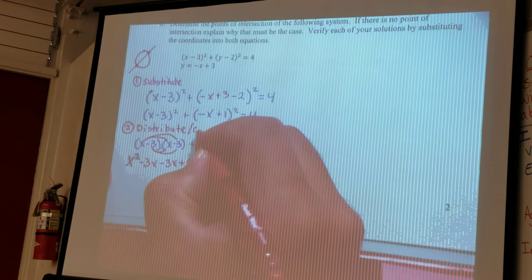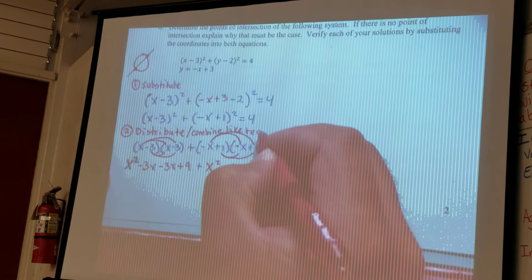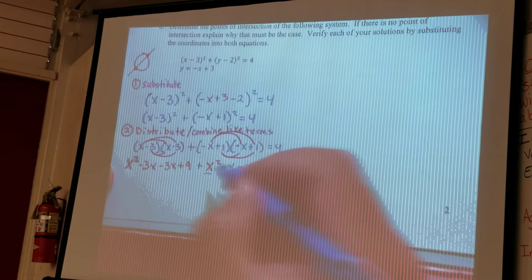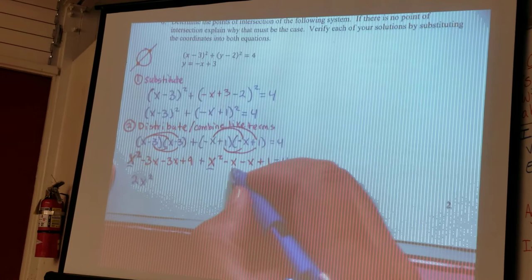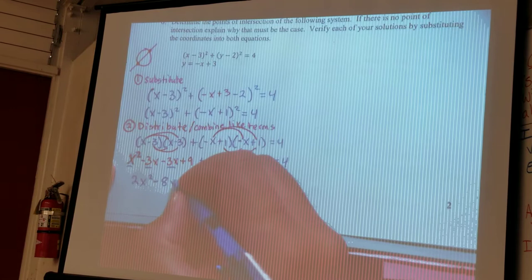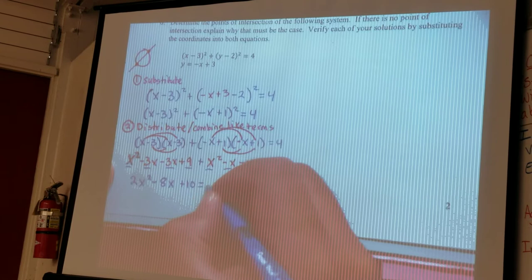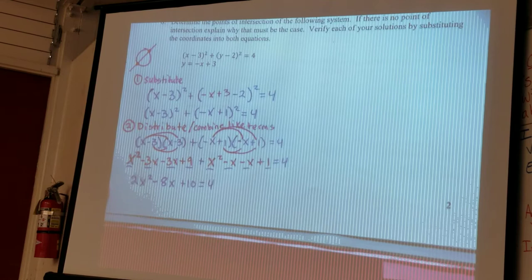So then once we've distributed, I'm going to put slash combine like terms. So we always got to simplify by combining all the like terms, so x squared and x squared becomes 2x squared, negative x, negative x, negative 3x, negative 3x, that becomes negative 8x, positive 9 and a positive 1, so that becomes plus 10, equals 4.